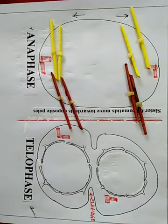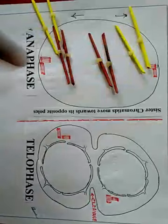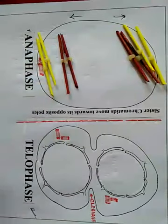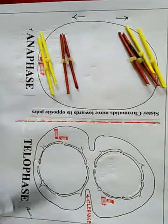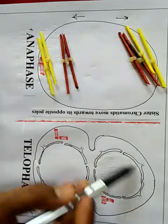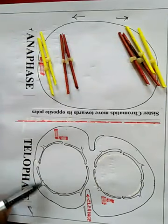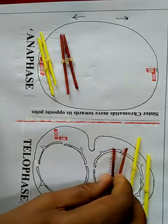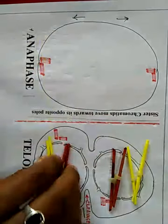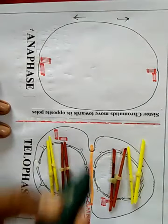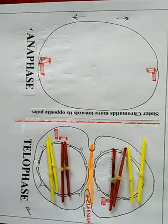Before telophase, you can see that sister chromatids move towards opposite poles. After this anaphase, what will happen in telophase? In telophase the cleavage occurs. The nuclear membrane will reappear. Set number one chromosomes will be on one side and set number two chromosomes on the other side. After that, this cleavage is complete.